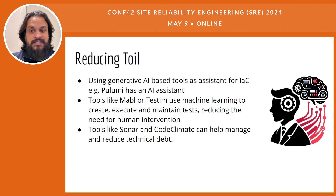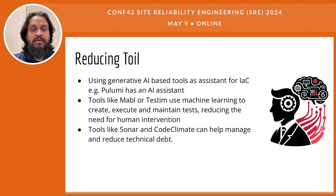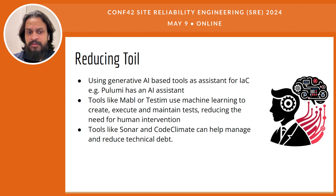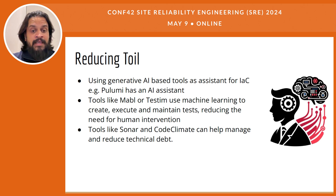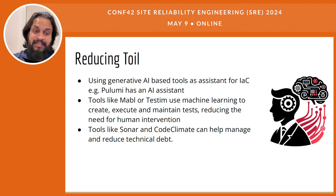Generative AI is reshaping Infrastructure as Code (IaC) practices by offering AI-driven assistance that helps automate and optimize the creation and management of infrastructure setups. An example of this is Pulumi, which integrates with an AI assistant to help developers and SREs generate, test, and manage IaC scripts more efficiently. These AI assistants can suggest best practices, identify potential errors in code, and even recommend optimizations. This reduces the cognitive load on engineers and accelerates the development cycle by enabling quicker iteration and deployments, thereby significantly reducing manual toil in infrastructure management.